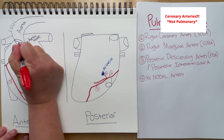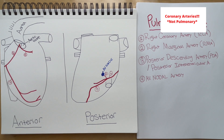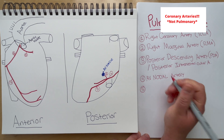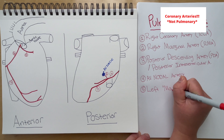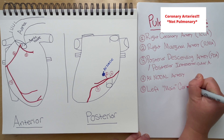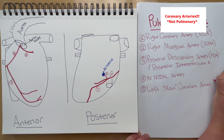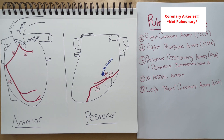Next we have the left main coronary artery. This branches right off of the aortic valve and it's fairly short. I drew a little notch at the end of the artery so that you don't get it confused with the artery that continues. This small section labeled number five is the entire left main coronary artery, and it supplies blood to the anterior portion of the top part of the heart — mostly the left atrium.